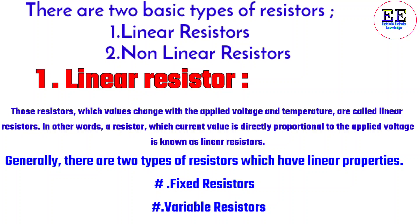Those resistors whose values change with the applied voltage and temperature are called linear resistors. In other words, a resistor whose current value is directly proportional to the applied voltage is known as a linear resistor. Generally, there are two types of linear resistors: number one, fixed resistors, and number two, variable resistors.